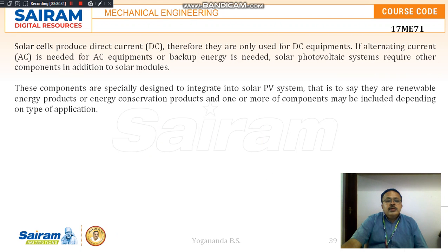These solar cells produce direct current — DC. Therefore, they are only used for DC equipment. If AC is needed for AC equipment or backup energy is needed, then the solar photovoltaic system will require other components in addition to the solar modules.